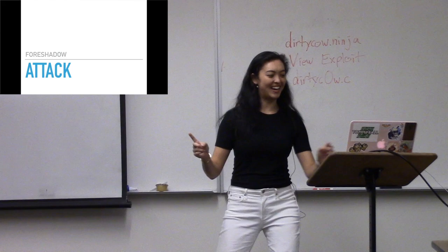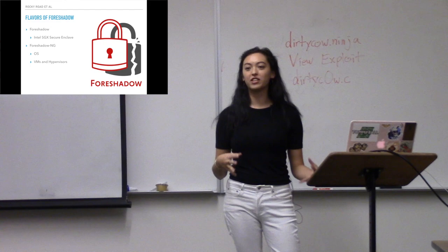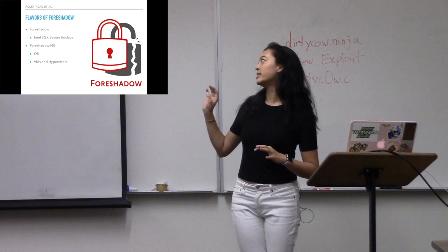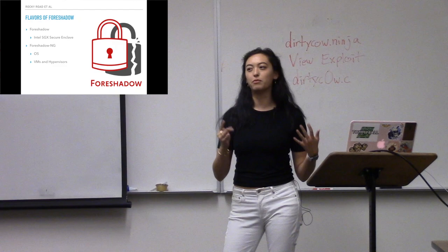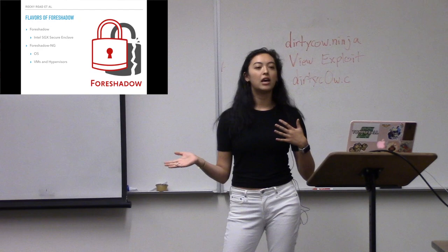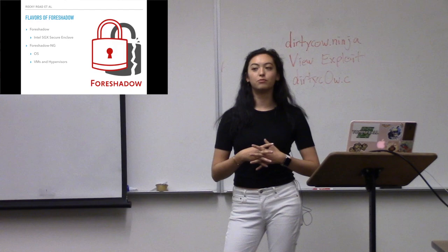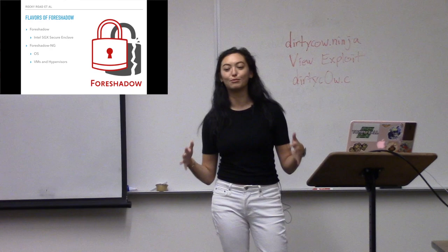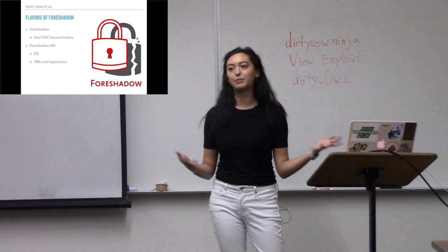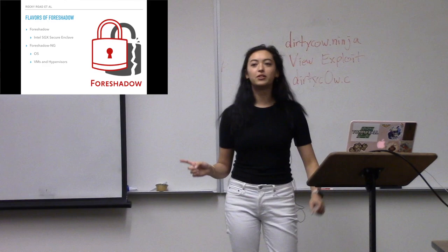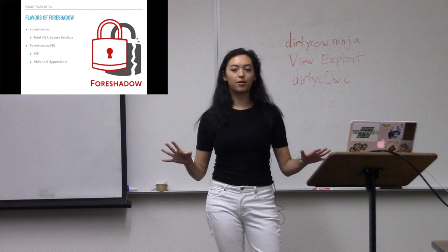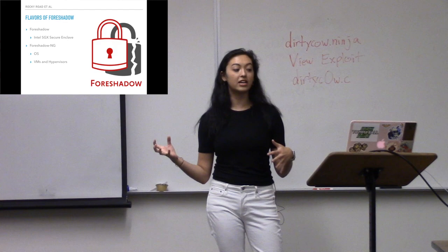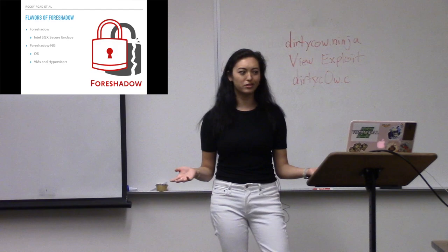Foreshadow was discovered in January of this year by two separate research teams. There are three different flavors: the first is the Intel SGX Secure Enclave version, which is the one I'll mostly talk about today. The other is Foreshadow-NG, which stands for Next Generation — that takes advantage of the operating system, VMs, and hypervisors. You can execute this attack with no privileges at all, except for being a user on the machine. If you have root privilege, that makes it easier, but then why are you doing this in the first place? It has not been seen in the wild — it's only a research thing. They told Intel in January and it was released to the public in August, so it's a super new vulnerability.